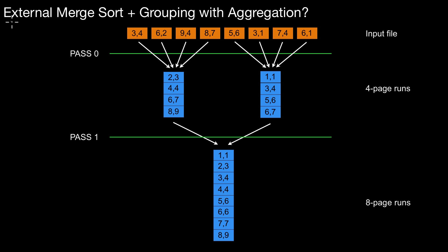So far, we already learned about two different algorithms for query processing. The first was external merge sort, and the other was grouping with aggregation. In this video, we will look at how to combine those two algorithms. A trivial way would be to first run external merge sort and once done, run grouping with aggregation. However, there are far more effective ways of combining those two algorithms, and that is what we look at in this video.